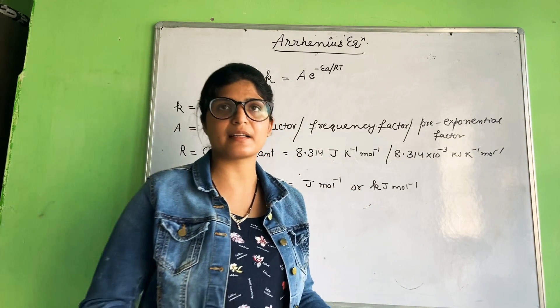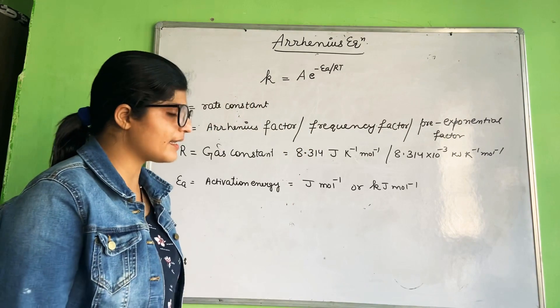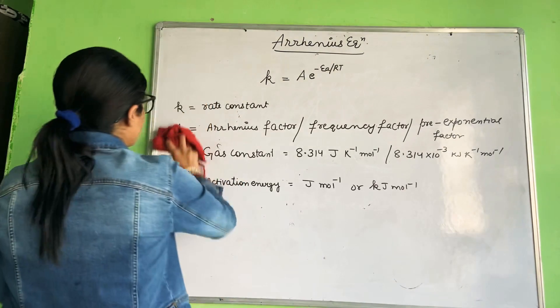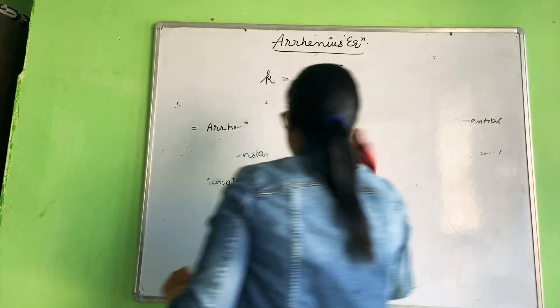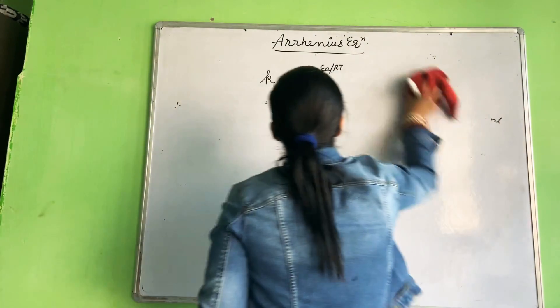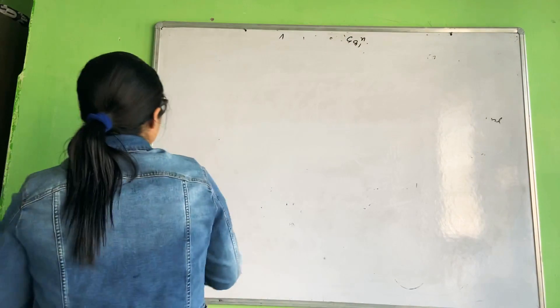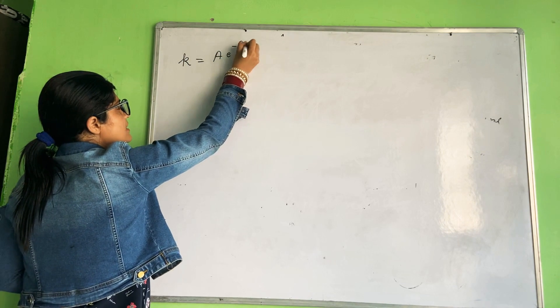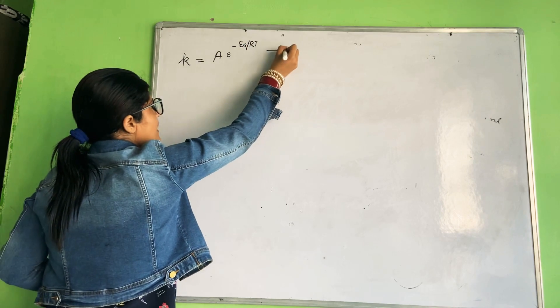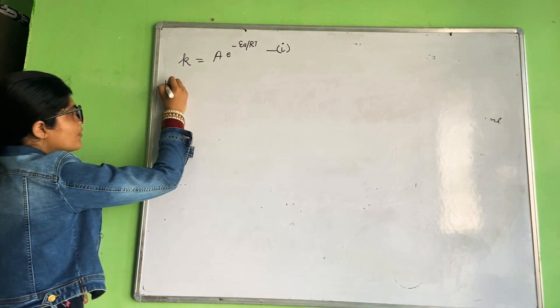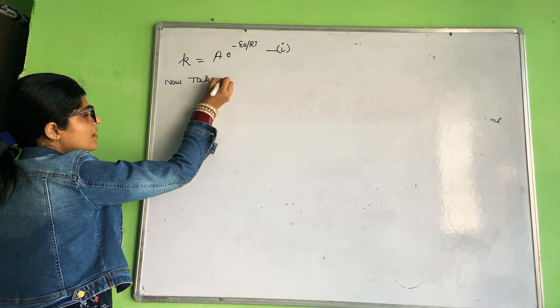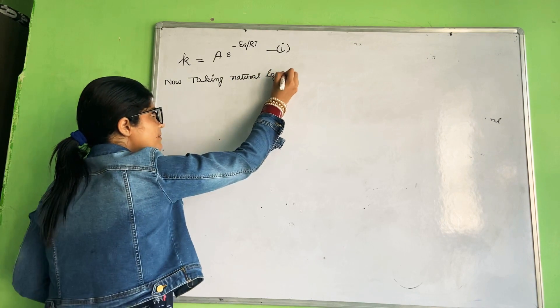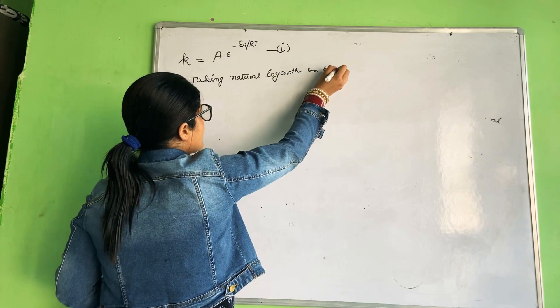So these are the things present in the Arrhenius equation. Let's derive this equation. Our equation is k equals A times e minus Ea upon RT. Let's calculate it as equation number 1. Now taking natural logarithm on both sides.